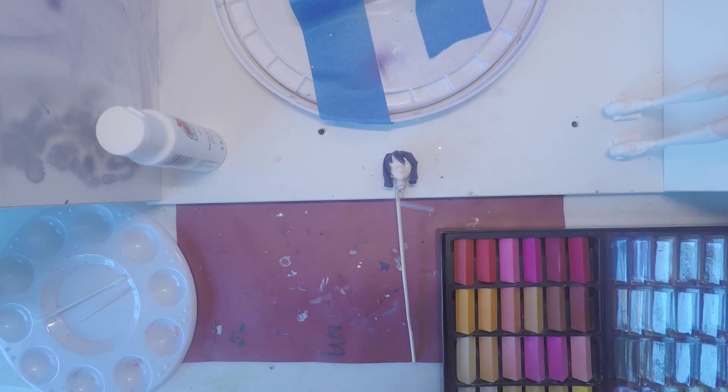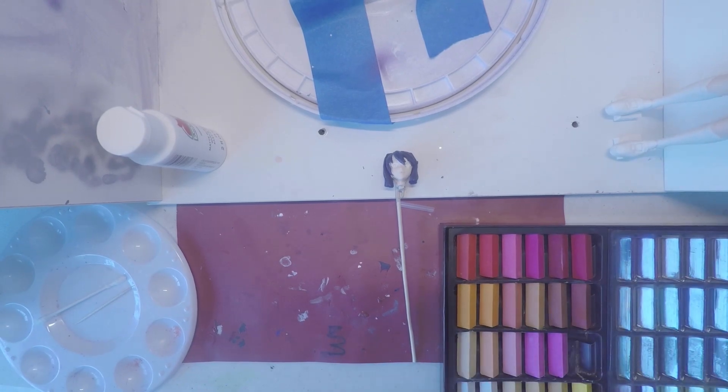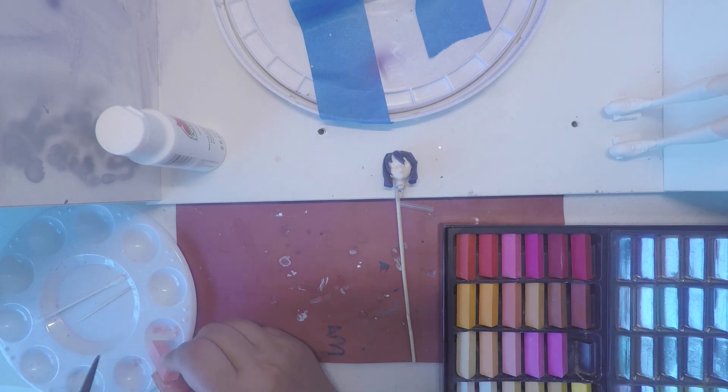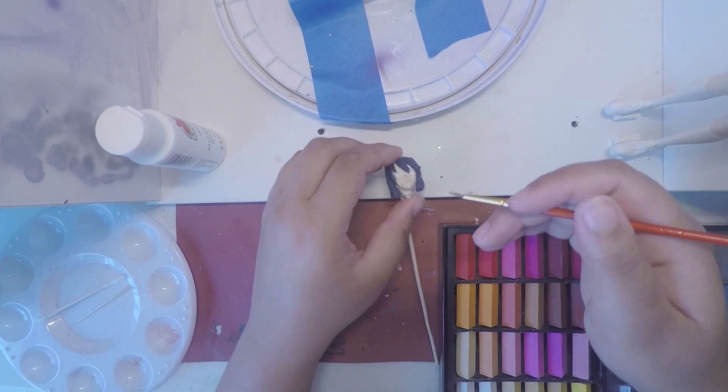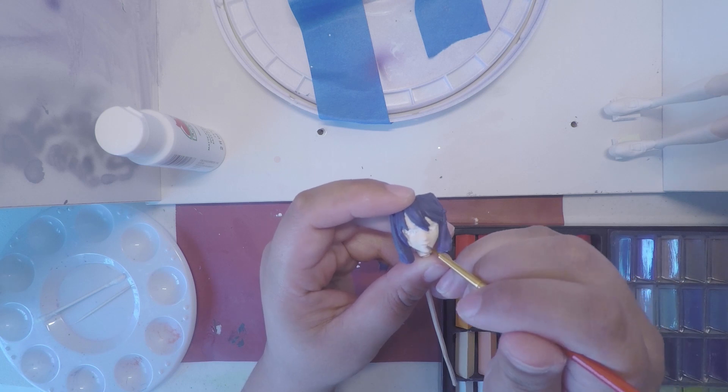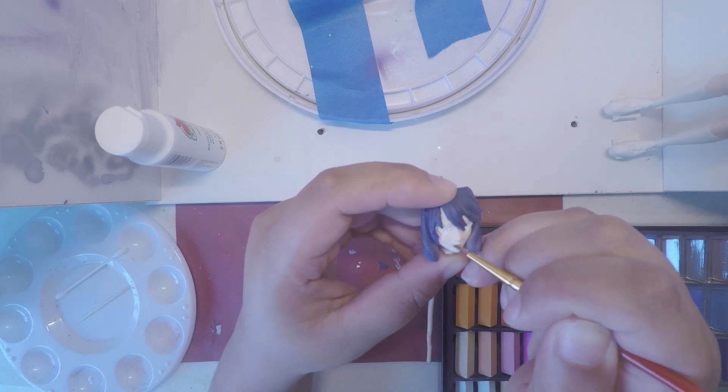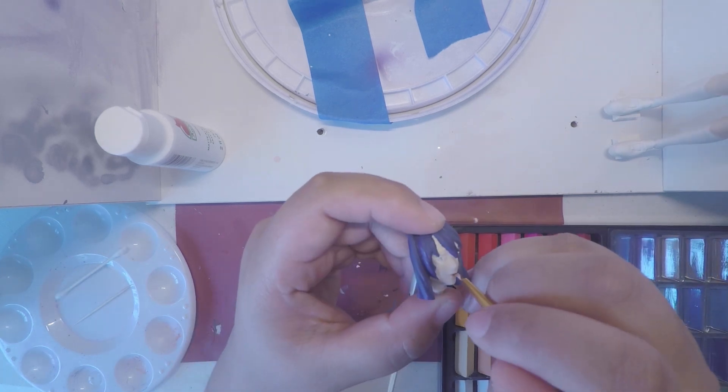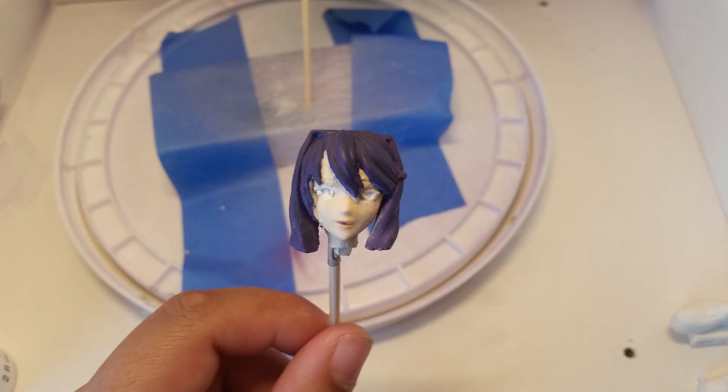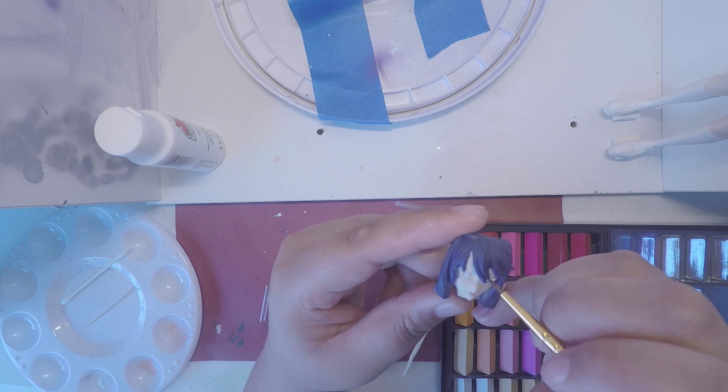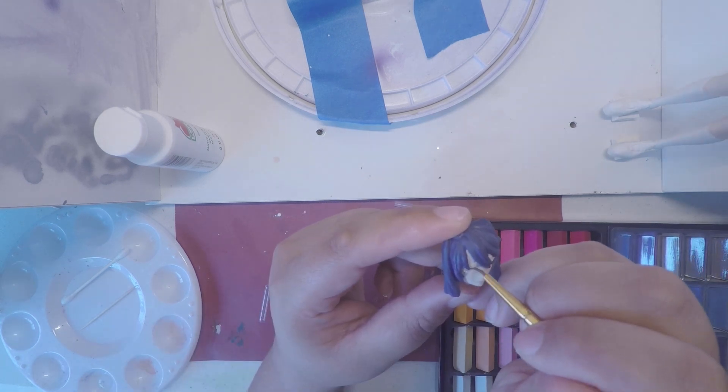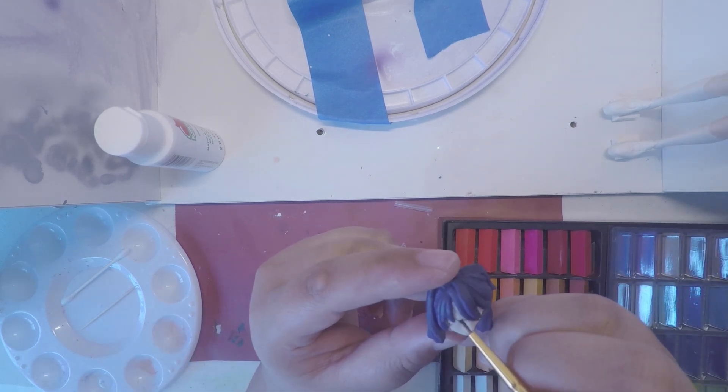I then added some blushing to Yuri's lips, using hard chalk pastels that I shaved into a dust and applied with a paintbrush. If I needed to intensify the color, I would wet the paintbrush. I also added some blushing to the lids of Yuri's eyes, and then grey to the inside of her eyes to tone down the white a bit.